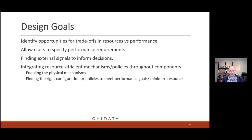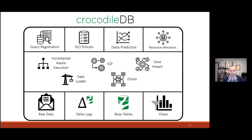In building CrocodileDB, we had a couple of design goals: figure out where the opportunities for trade-offs between resource and performance are; what mechanisms allow users to specify performance requirements; and what signals we can use to inform our decisions. With these knobs and information, how do we set the right knobs? What are the physical mechanisms and policies, and how do we set those policies to meet our performance goals? The system has all the standard database components — query execution, optimizers, and so forth — and I'm going to talk about two research projects: intermittent query processing and incremental-aware query execution.